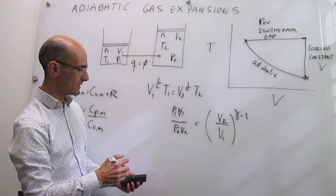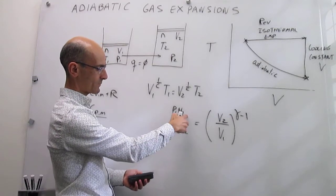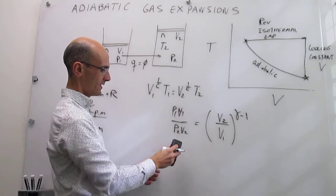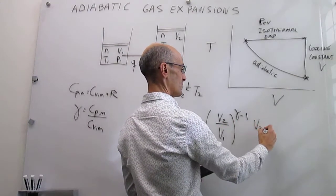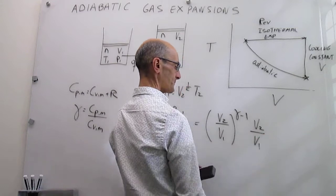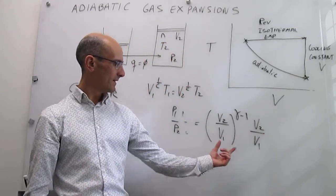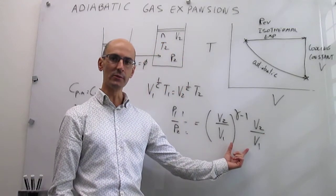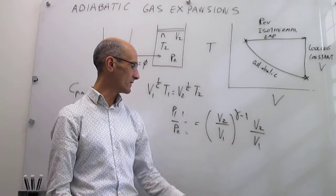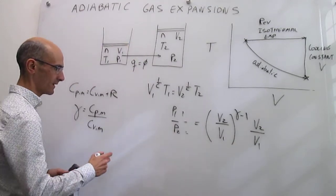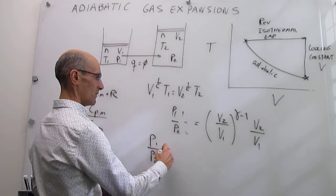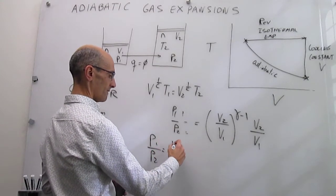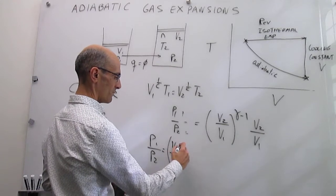Now, what we can do is just multiply both sets of expression by V2 over V1. When we do that, we come up with an expression that looks like this: V2 over V1. We recognize that this is simple to consolidate. Notice that that expression now is going to look like P1 over P2 is going to be equal to V2 over V1 to the gamma.